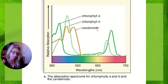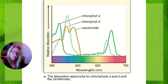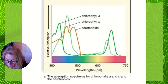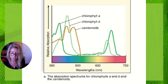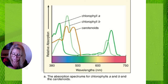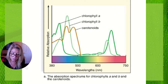Carotenoids — you can hear 'carrot' in that word — absorb the purples, blues, and greens, and the oranges and reds they do NOT absorb, so carrots appear orange. On your notes: absorption spectrum is a graph of the percent of light absorbed by each pigment at each wavelength. Chlorophyll A and B absorb violet, blue, and red and reflect green. The carotenoids are accessory pigments that absorb violet, blue, and green and reflect yellow and red.